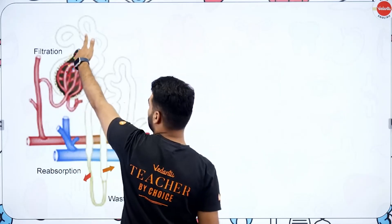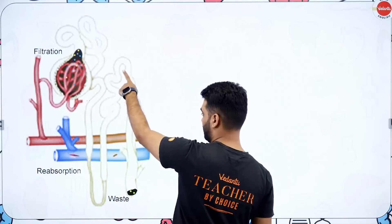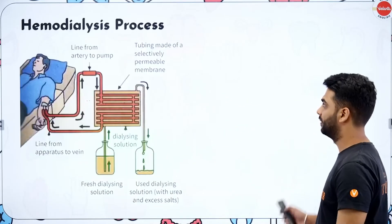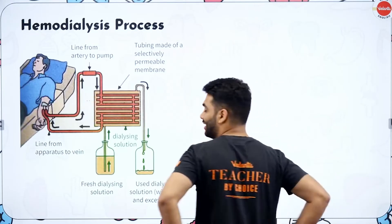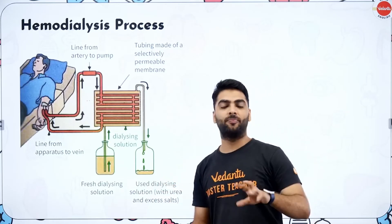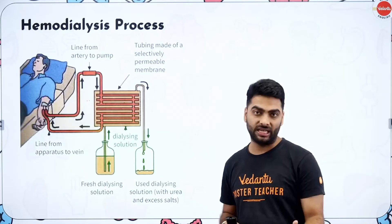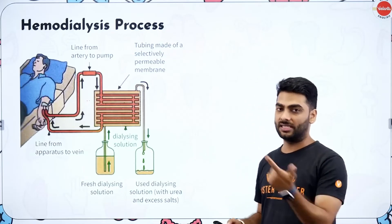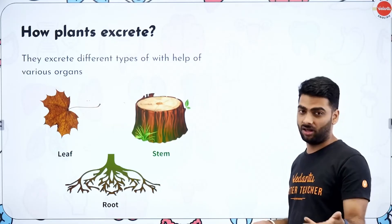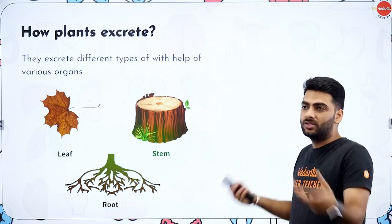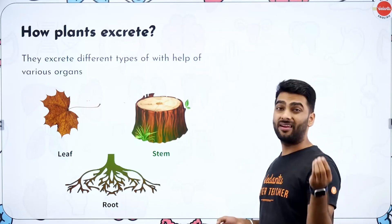Blood flows through the glomerulus under high pressure; whatever passes through the Bowman's capsule is the filtrate, which moves through the PCT, loop of Henle, DCT, and finally into the collecting duct as urine. Dialysis is a process where, if both kidneys have stopped functioning due to injury or infection, a machine filters the blood. Plants also excrete in the form of gum, resins, leaves, and bark; roots give out salts into the soil.